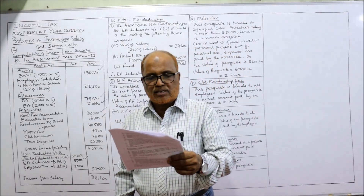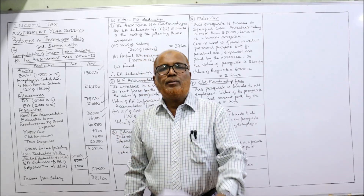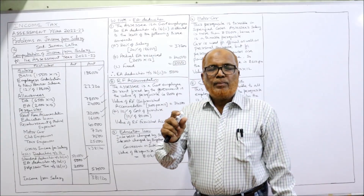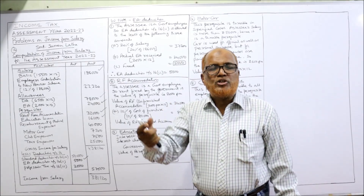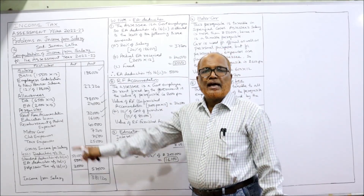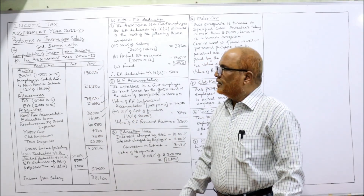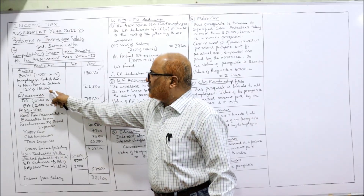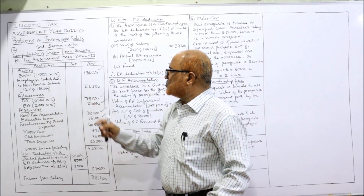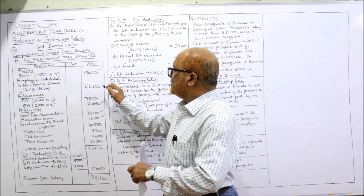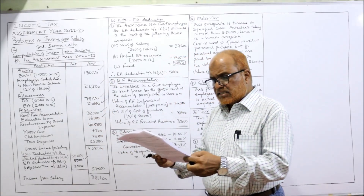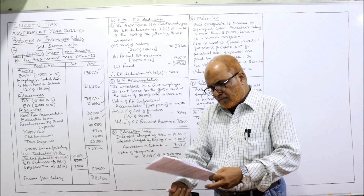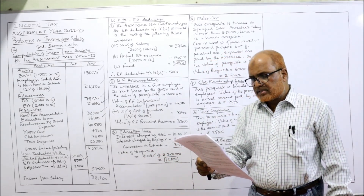During the previous year, she contributed 12% of salary to a pension scheme and the employer contributed equally. According to the rules, the amount contributed by the employer to the new pension scheme is fully taxable under salary. Employer's contribution to new pension scheme: 12% of ₹1,86,000 = ₹22,320.